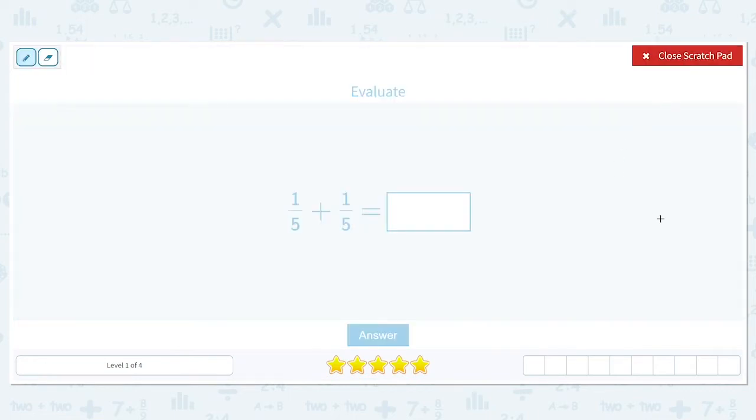Now before we start adding the fractions, let's review the parts of a fraction. So we're going to use this first one, one-fifth. A fraction has two parts. It has a top and bottom, separated by your fraction bar. The top has a name called the numerator, and the bottom of the fraction is called the denominator.